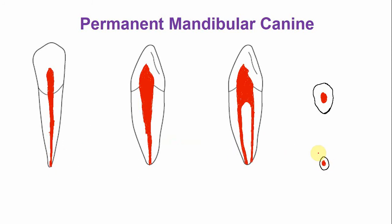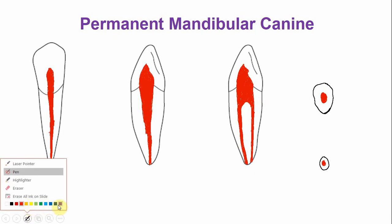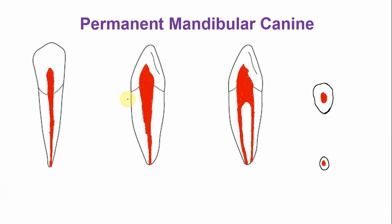With advancing age, because of the deposition of secondary and tertiary dentine, there is narrowing of the pulp chamber and canal. With advancing age, the size of the pulp chamber and canal is reduced. The pulp horn is nearly obliterated or disappears, and the size of the pulp chamber and canal is markedly reduced. Similarly, in the labiolingual section, the pulp horn is now really blunt — not sharp anymore — and the size of the pulp chamber and canal is markedly reduced.